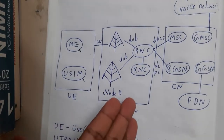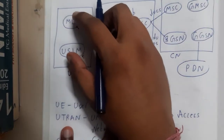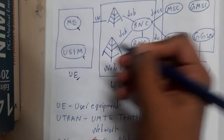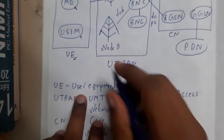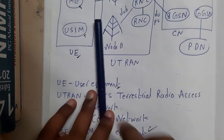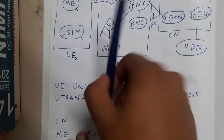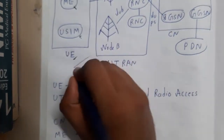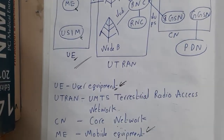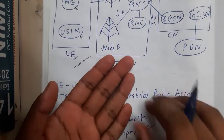Now you have a mobile and a SIM. When you insert the SIM into the mobile and combine them into a single device, it becomes your UE — that is, User Equipment. The user will be using this for communication purposes.